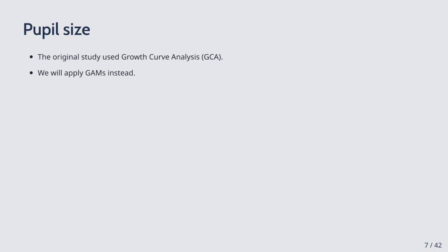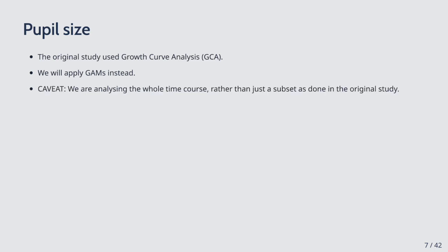The original study used growth curve analysis, or GCA — a more contrived way of analyzing nonlinear effects — so we're going to apply GAMs instead. A caveat: we're analyzing the whole time course of pupil size registration rather than just a subset as done in the original study. The results will not necessarily match those in the paper, both because we use a different methodology and because we look at the entire time course.